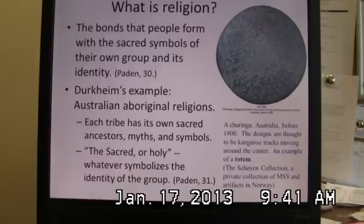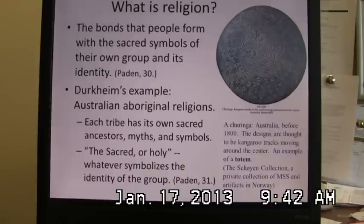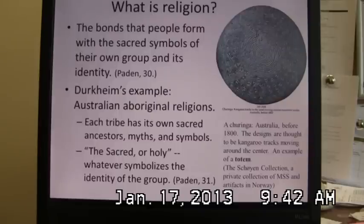The Chiringas were like a piece of wood or a board carved with particular symbols that have a meaning to that particular group. This illustration shows one probably created before the year 1800, and the designs are thought by scholars to be kangaroo tracks moving around the center. This particular object would be very important to a particular group because it would express who they were. According to Durkheim, sacredness or holiness is a value that a society places on an object — a particular group will decide what objects are sacred to them. The holy objects were real and powerful because they were charged with the very identity of the group itself. So symbols that somehow relate to the identity of a group of people are called totems.